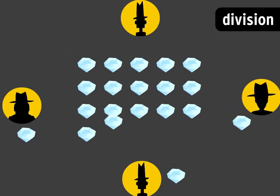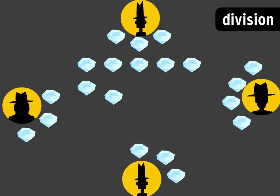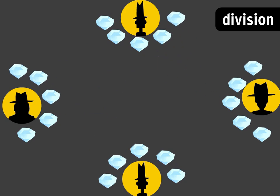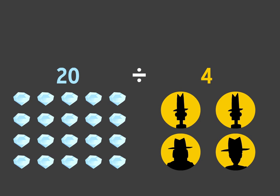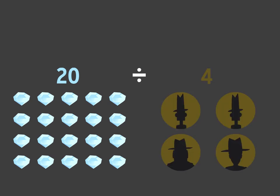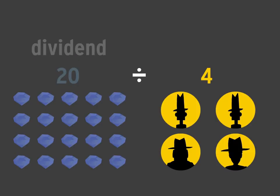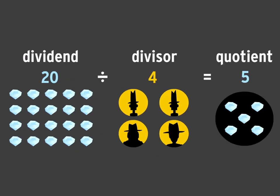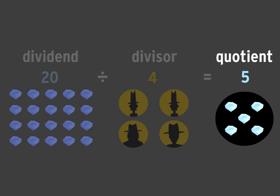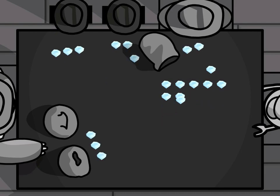Division is basically the splitting of large numbers into equal groups of smaller numbers. In our case we're trying to divide our loot between the four of us so that we have an equal share. In division, all these numbers have special terms. The number being divided is called the dividend — here the dividend is 20 for our 20 diamonds. The number you're dividing by is called the divisor — here the divisor is 4, since we have four people. And the answer you get is called the quotient. Our quotient is 5, so each of us gets five diamonds.